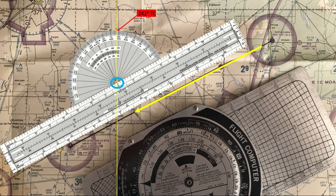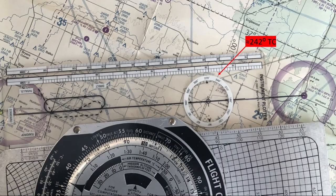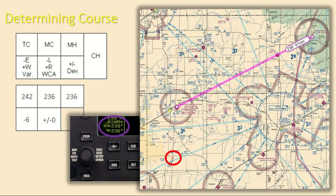If you were to use a VFR plotter, as shown here, you would find the true course from Buffalo to Perryton is 242 degrees. An instrument plotter, made for IFR charts, will also show approximately a 242 degree true course. As a memory aid for variation, remember: East is least, West is best.